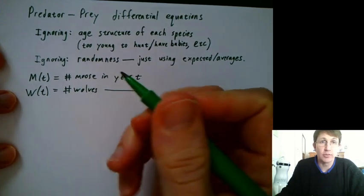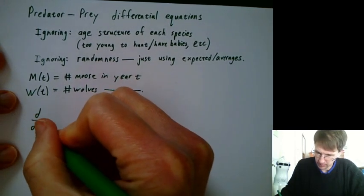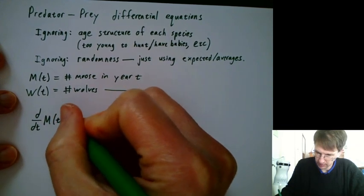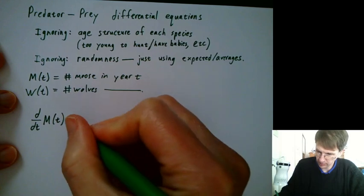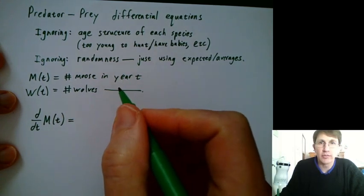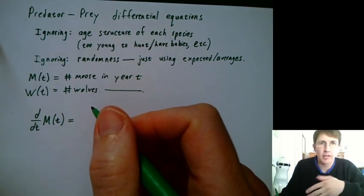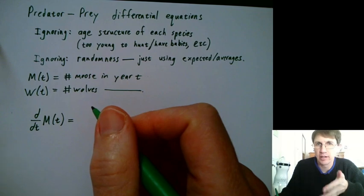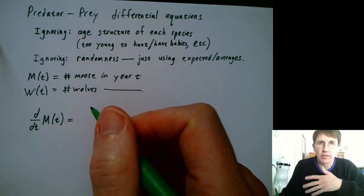How does the number of moose change? That would be d/dt m(t). That's the derivative, so that's the rate of change of the number of moose. Another thing we're going to ignore is the fact that you can't have fractional moose or wolves. All this is approximate anyway, so if we get a non-integer number, which we usually will, we just won't worry about it. We're not going to round to integers or anything.